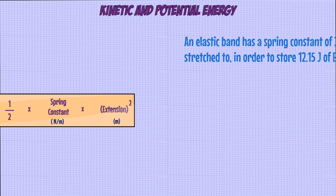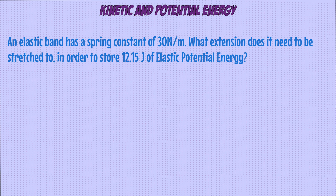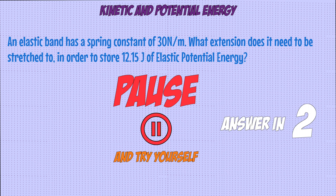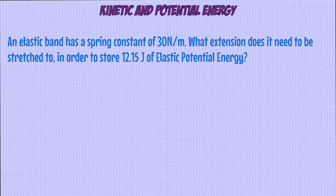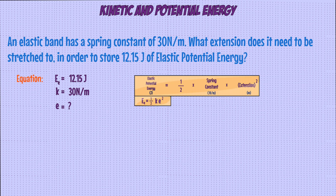For a question using this equation, let's say we have an elastic band that has a spring constant of 30 newtons per meter. What extension does it need to be stretched to in order to store 12.15 joules of elastic potential energy? The information we've been given is an elastic potential energy of 12.15 joules and a spring constant of 30 newtons per meter, and we're asked to find out the extension. We write down the equation and check for any conversions, but all the units in the question match up with the units in the equation, so there's no need to do any conversions.